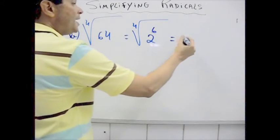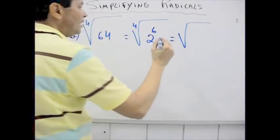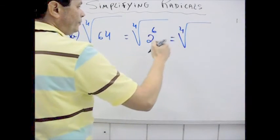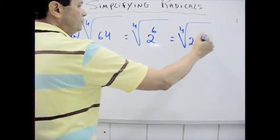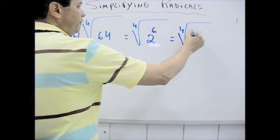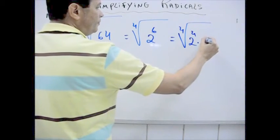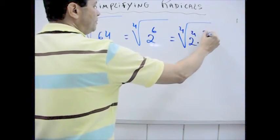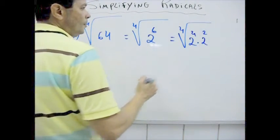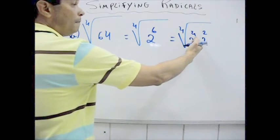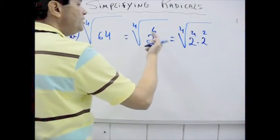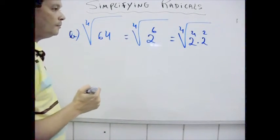But I can write like this: 2 to the 4th power times 2 to the 2nd power, because 4 plus 2 is 6, right?